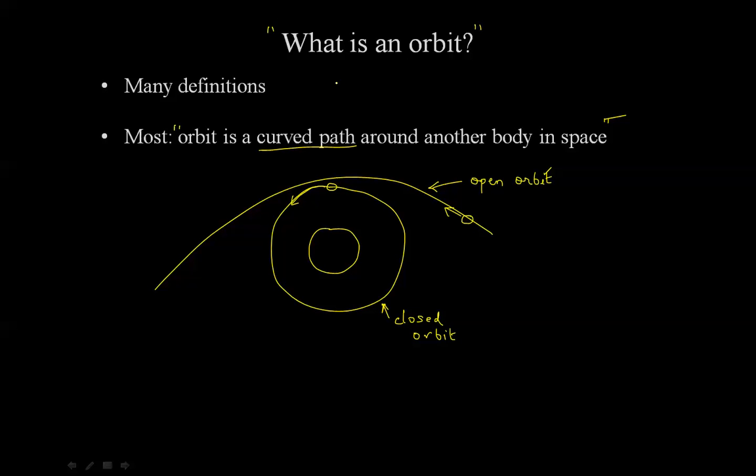Because we are studying orbital mechanics in this course, we will define closed orbits and not open orbits. Open orbits are rather difficult to define perfectly in terms of physics. They can get quite complex. Closed orbits, on the other hand, are fairly easy to define.